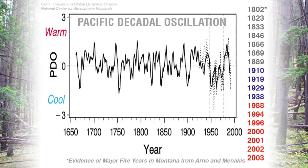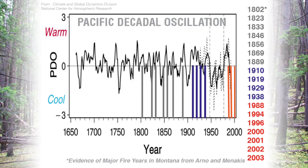Superimposing these years onto our climatic graph, we can see that climate has a profound effect on fire — when we have a hot dry summer, or actually a series of hot dry years, we tend to have larger landscape-level fire events. It typically takes a landscape several years to dry out, so several years of drought enable larger wildfire events. You'll also notice that during cool wet periods we do not have these landscape-level fire histories.